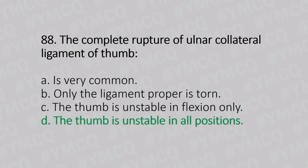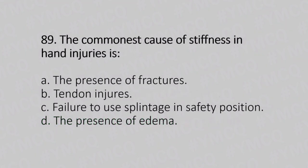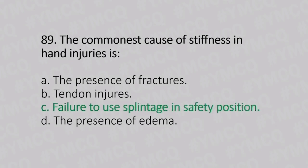Now let's move to question number 89. The commonest cause of stiffness in hand injury is. Option A: the presence of fractures. Option B: tendon injury. Option C: failure to use splintage in safety position. Option D: presence of edema. And the answer is Option C, failure to use splintage in safety position.